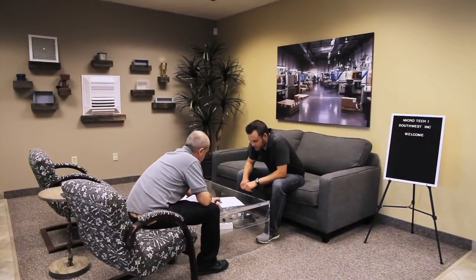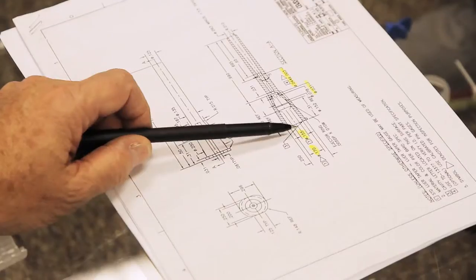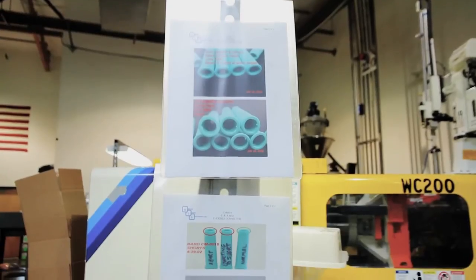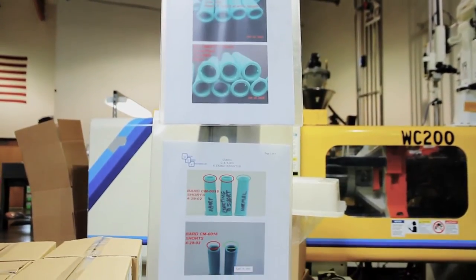For each job, we establish quality criteria with the customer prior to production. The criteria is then used to establish the scientific molding process, quality lab program, and press side work instructions.